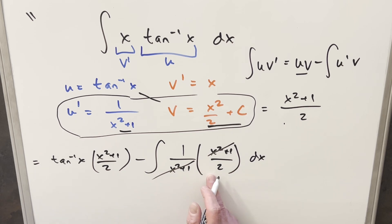But then doing that, our x squared plus 1s are going to cancel, and now we're just integrating 1 half. So for my final solution of this, we got arctan of x times x squared plus 1 all over 2, minus 1 half, integrating 1 dx just gives me x plus c, and that's it.